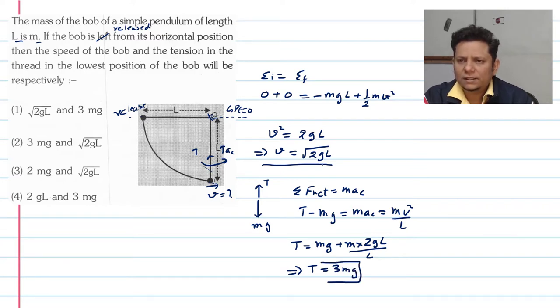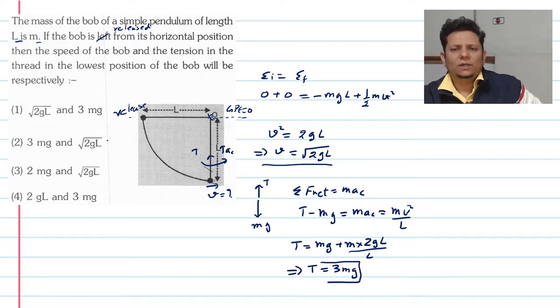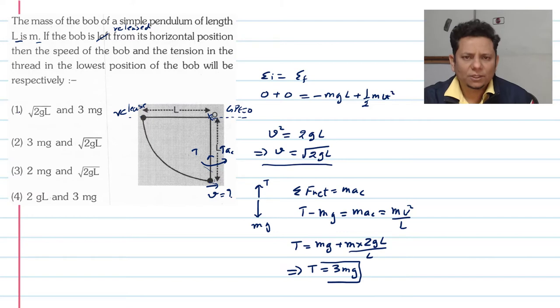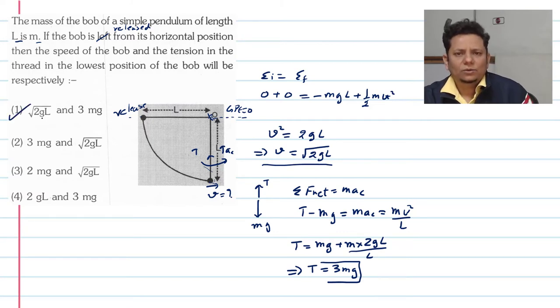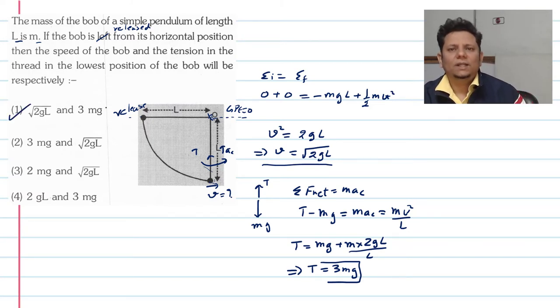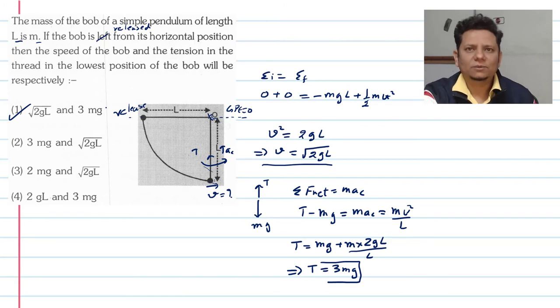यह आपकी tension = 3mg हो गई और velocity = √(2gl) हो गई। Hence option no. 1 — √(2gl) and 3mg — would be the right answer. I hope यह solution आपको समझ में आया।